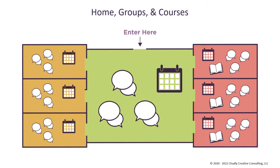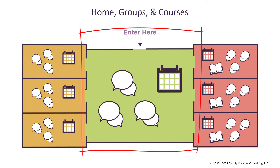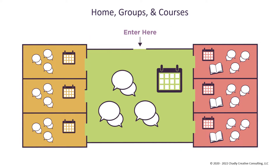Currently, the Mighty Networks platform has three building blocks that can be used to configure a network. When members enter the network, they're in the home area — an area for interaction of all the members of the network. The home area also provides access to areas for small group interaction. Currently, those are groups and courses.